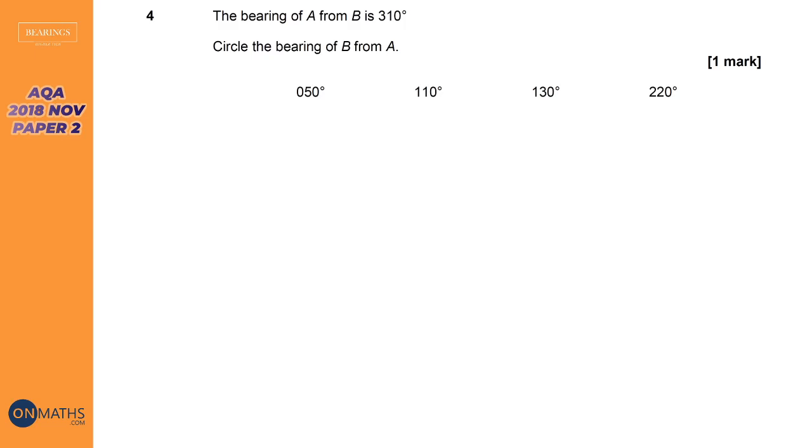It says that the bearing of A from B is 310 degrees. Circle the bearing of B from A. So we've got to understand what the exam means with this statement here. Let's investigate that. I'm going to put on an A and I'm going to put on a B, and I'm going to try and understand what it means by the bearing of A from B is 310.